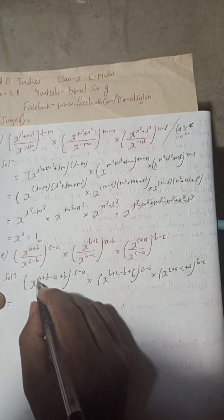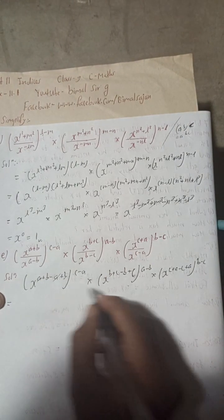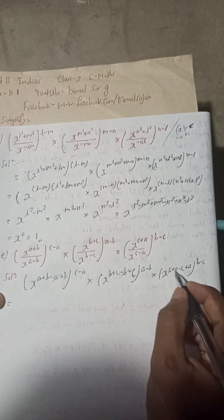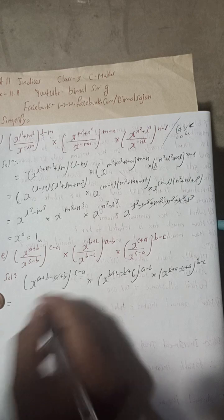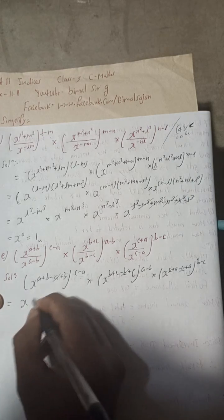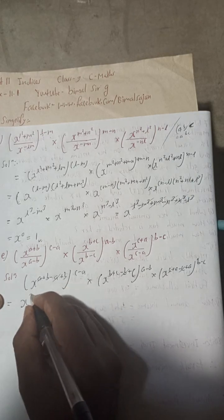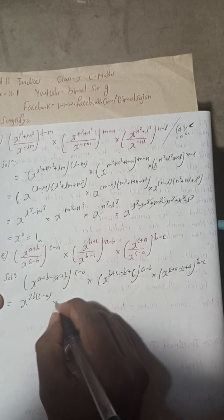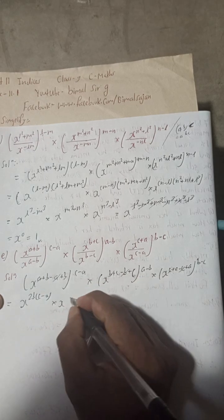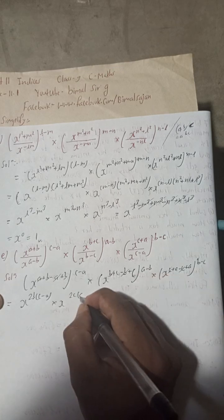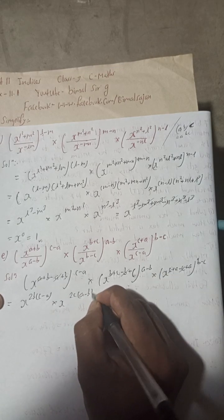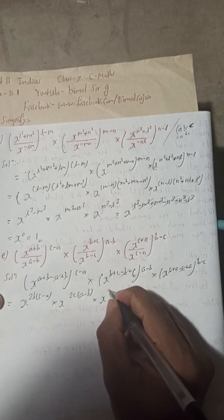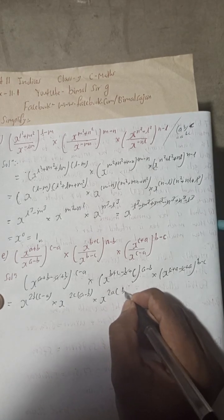Now simplifying: plus a and minus a cancel, plus b and minus b cancel, plus c and minus c cancel. What remains is x to the power 2b in bracket (c minus a), into x to the power 2c in bracket (a minus b), into x to the power 2a in bracket (b minus c).